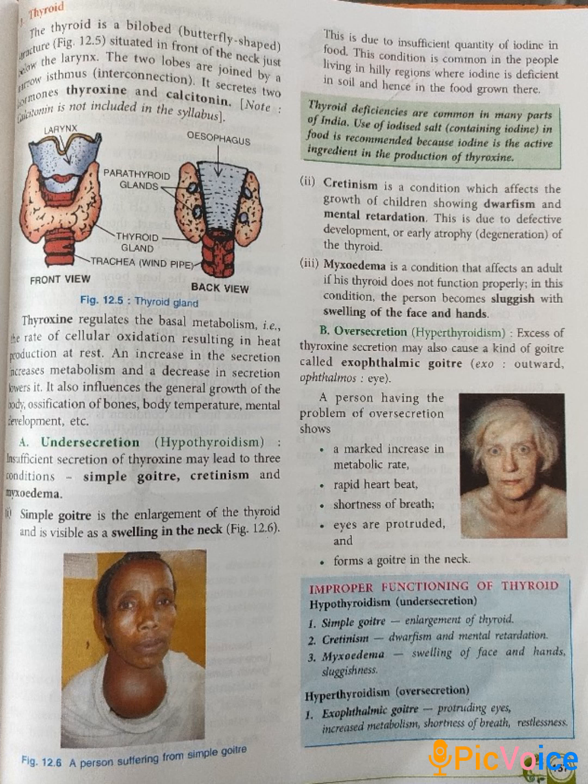The second disorder is cretinism, a condition that affects the growth of children, showing dwarfism and mental retardation. This is also hypothyroidism — due to low thyroxine in children, their growth stops, dwarfism can occur, height does not increase, and mental retardation develops because the brain cannot develop properly. This occurs due to defective development or early atrophy of the thyroid gland.